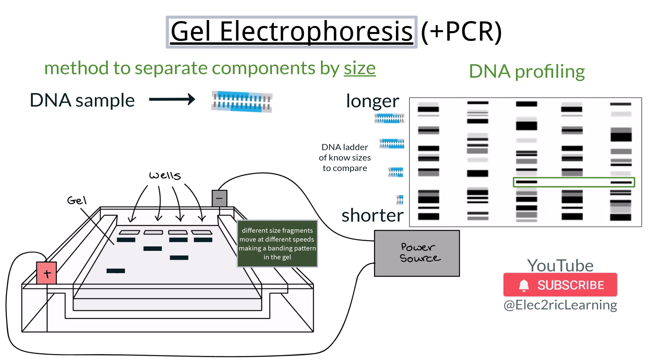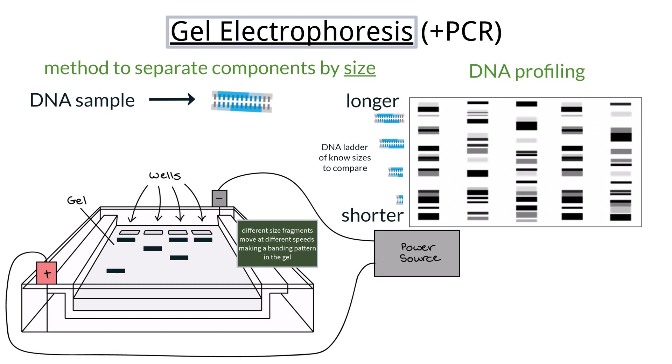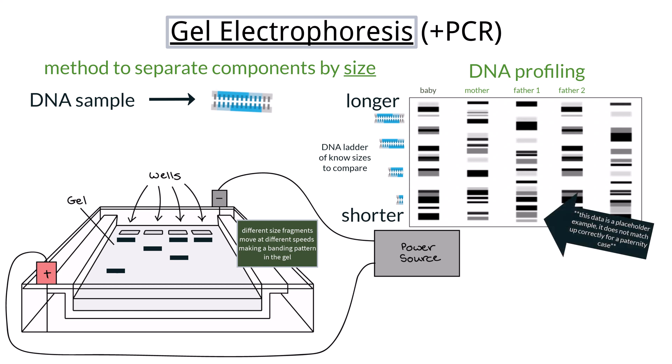This is commonly used in criminal investigations when trying to match the DNA of a suspect to DNA found at a crime scene, or in paternity cases when trying to deduce who the father of a specific child is. In the case of the father, about half of the bands should be identical because the child obtained half of their DNA from the father and the other half from the mother. This is of course dependent upon the specific markers they choose to amplify. Understanding how both PCR and gel electrophoresis work is very important for the IB exam.